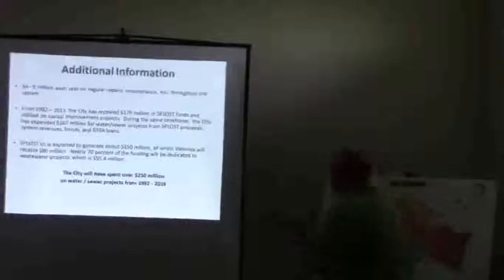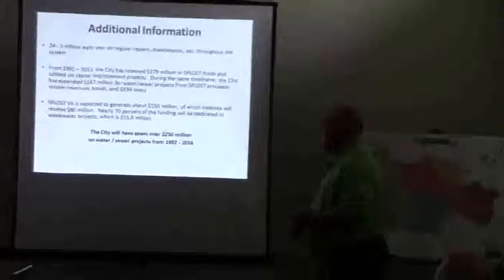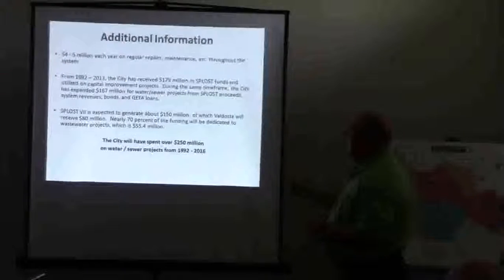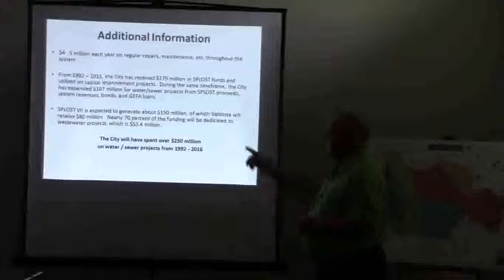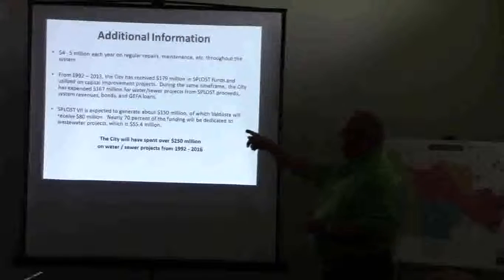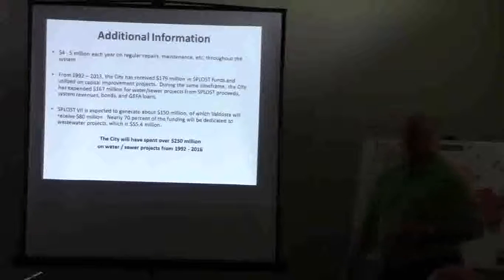SPLOST 7 was just passed this past year. It's expected to generate about $150 million, of which Valdosta will receive $80 million. Nearly 70% of that funding will be dedicated to wastewater projects, which is $55.4 million.